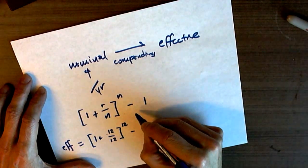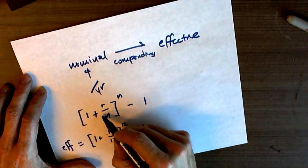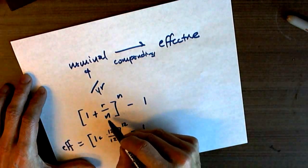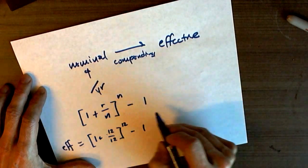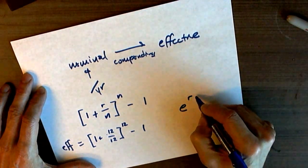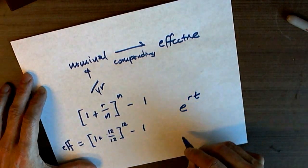and that's continuous compounding. Continuous compounding means that the number of compounding periods in a year is infinity. And the limit of this equation as n approaches infinity is e to the rt.